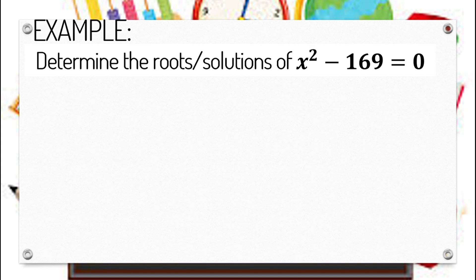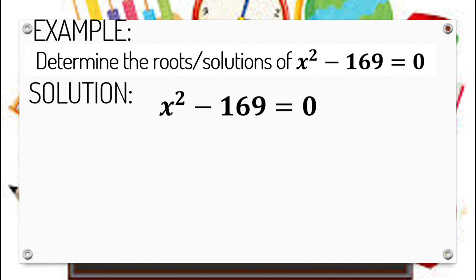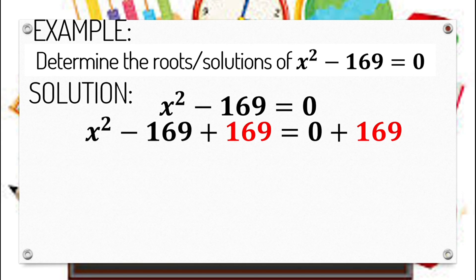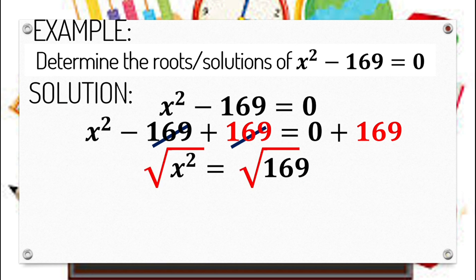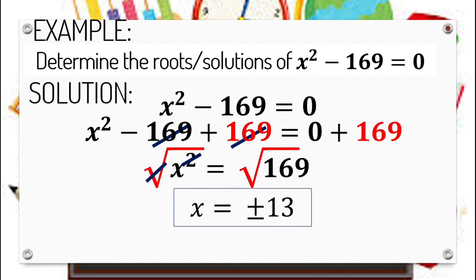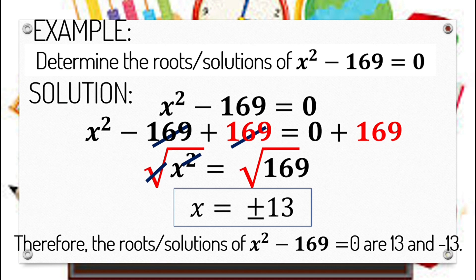Another one. Determine the roots or solutions of x squared minus 169 equals 0. This is not yet in x squared equals k form, so we need to transpose negative 169 to the right side using the addition property of equality. Our simplified equation becomes x squared equals 169. We can now apply extracting square roots. Since 169 is a perfect square, x is equal to positive negative 13. Therefore, the roots of x squared minus 169 equals 0 are 13 and negative 13.